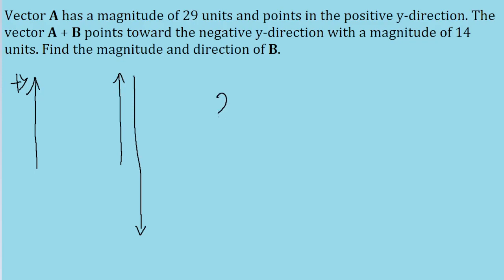We know that vector A is going to be positive 29, since 29 directed in the positive y-axis. Then we're adding some vector magnitude B, and this is going to be equal to 14 units in the negative y direction, so negative 14.